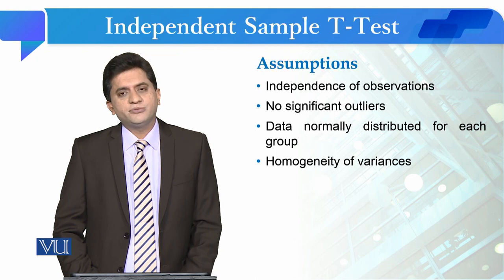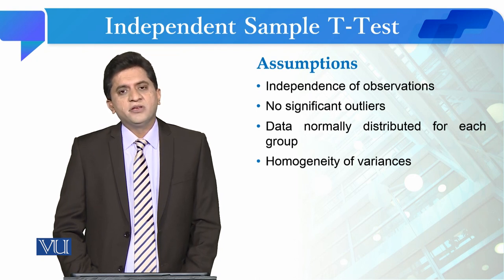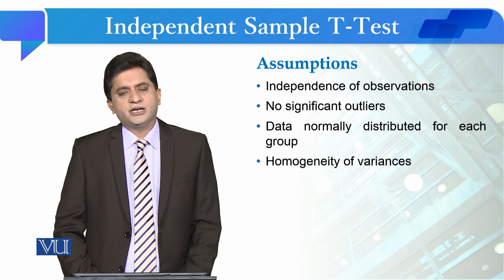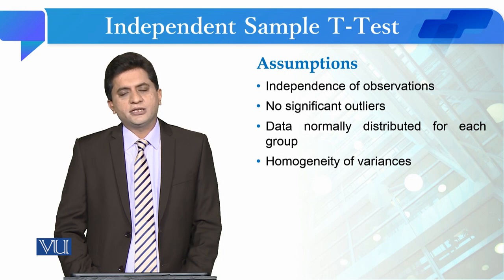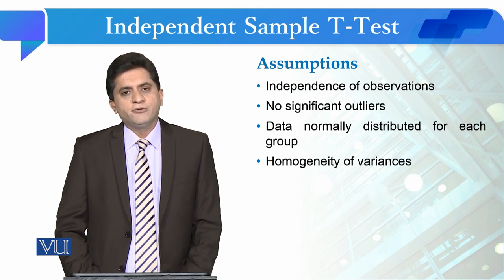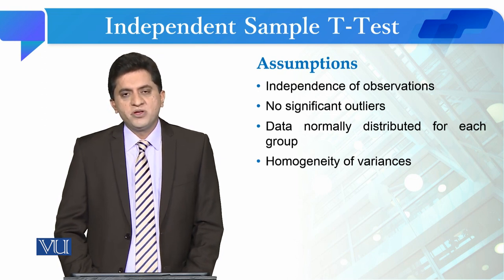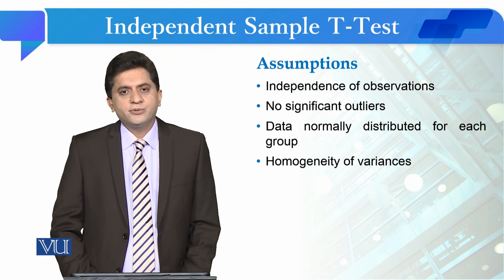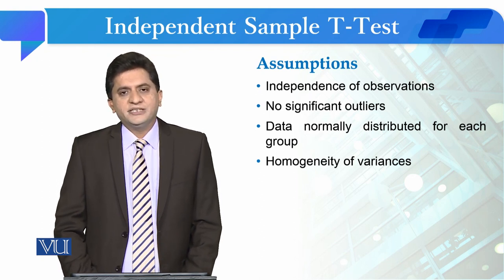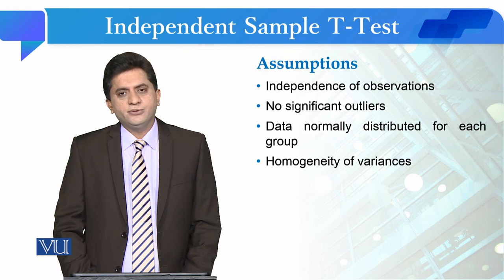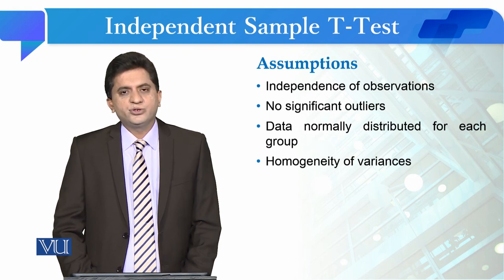Homogeneity of variance is the fourth assumption. When you are computing a test with two categories, the variance of your dependent variable should be equal for both groups. If the variances are not equal, then we will use an alternate path to compute the t-value.